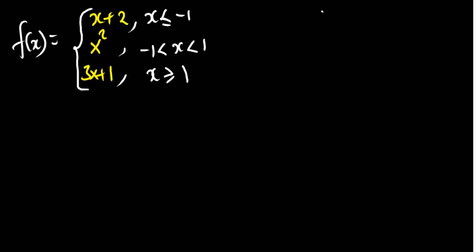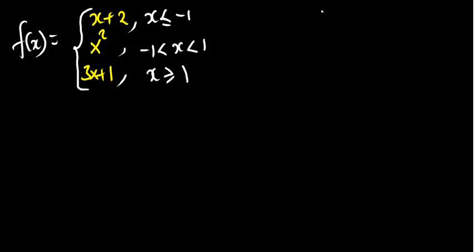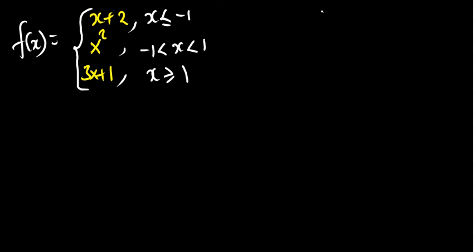This is what we call a piecewise function, and we want to graph it. When graphing, we need to understand the conditions given. These conditions help us get the values to put on the graph. We'll start with the first condition: x plus 2, where x is less than or equal to negative 1. The values of x start from negative 1 going down.